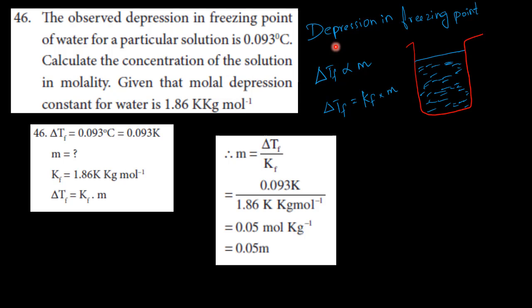First, depression in freezing point constant. Let's say one of the thunny is normal.